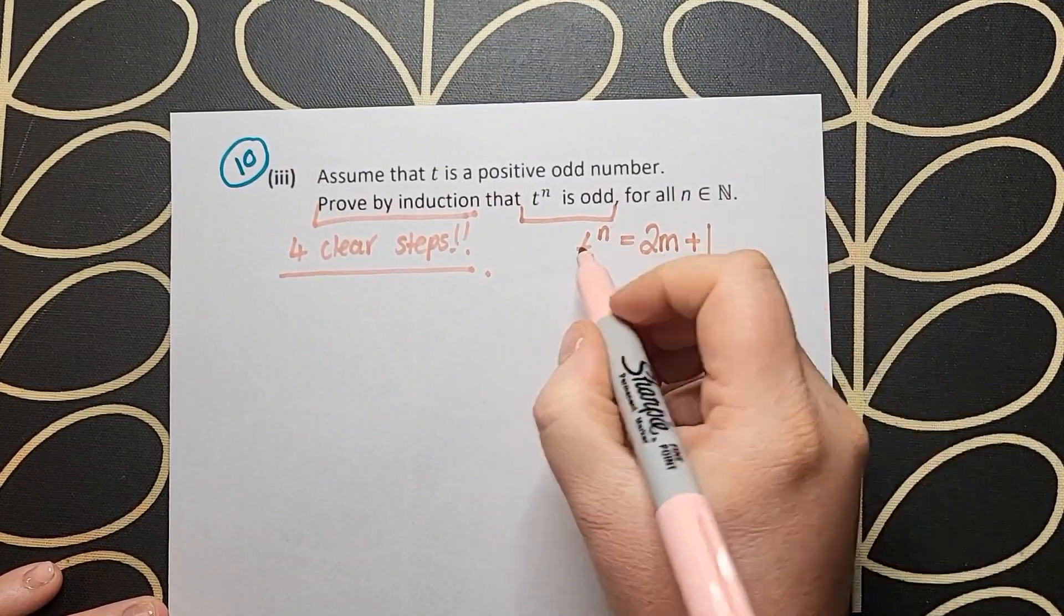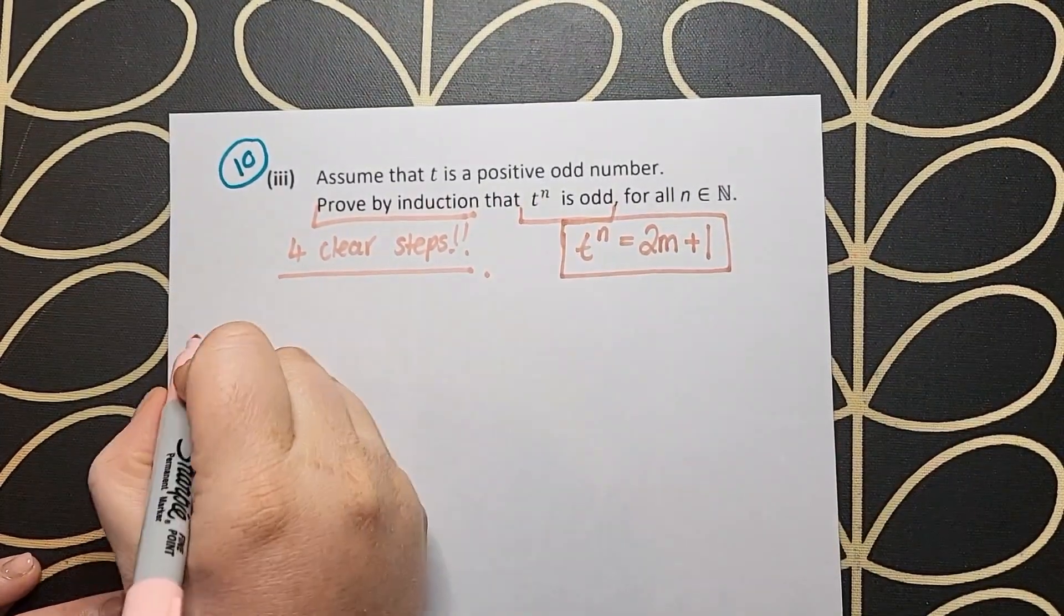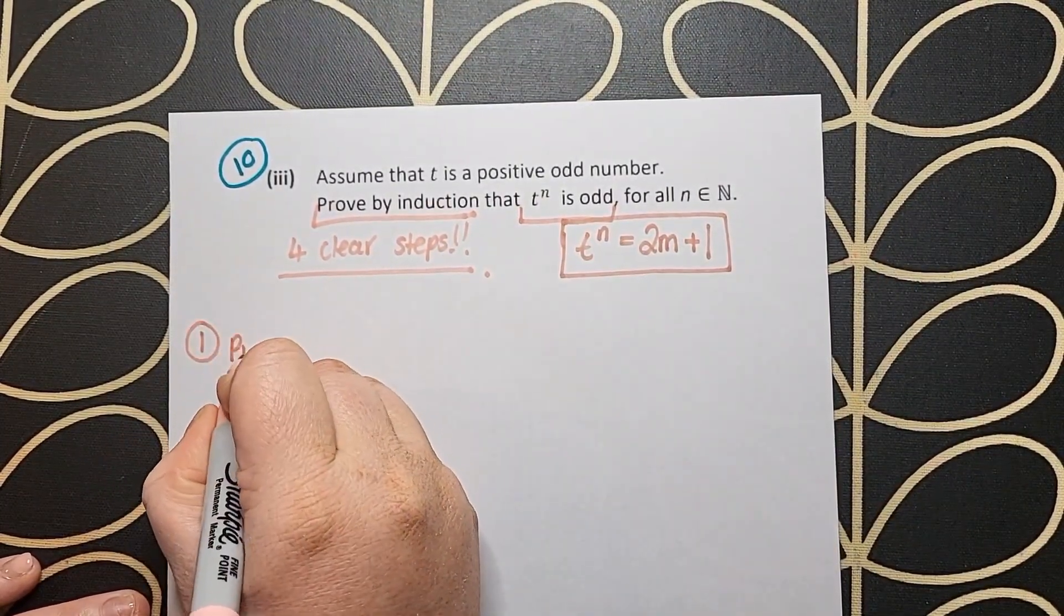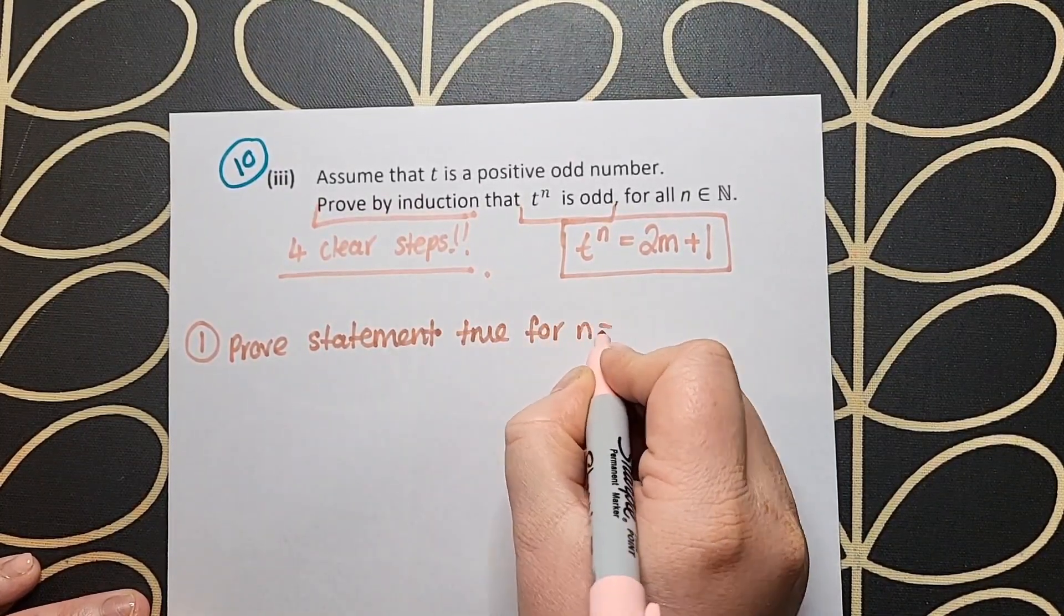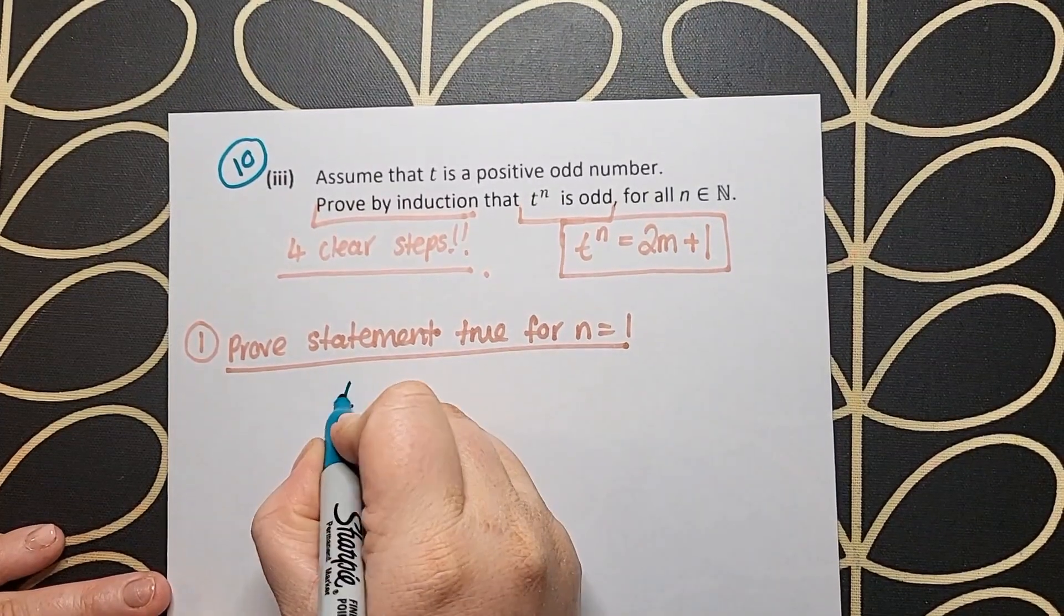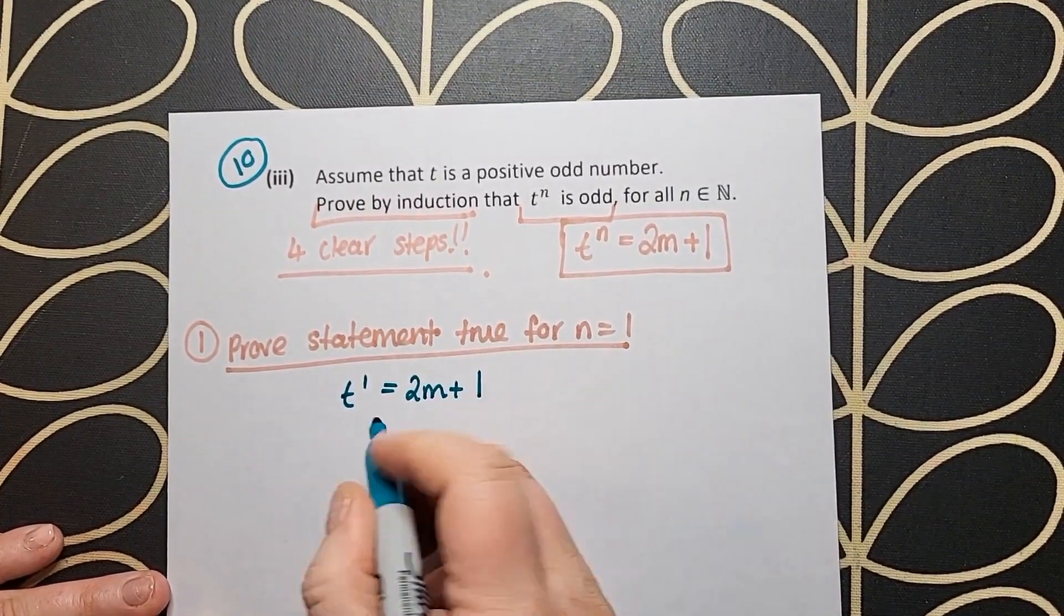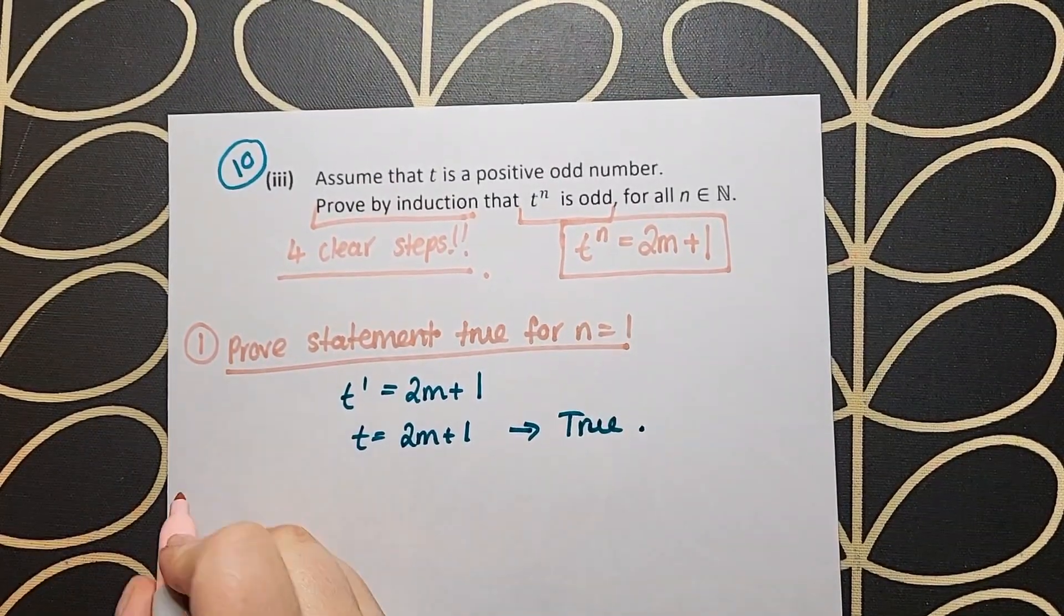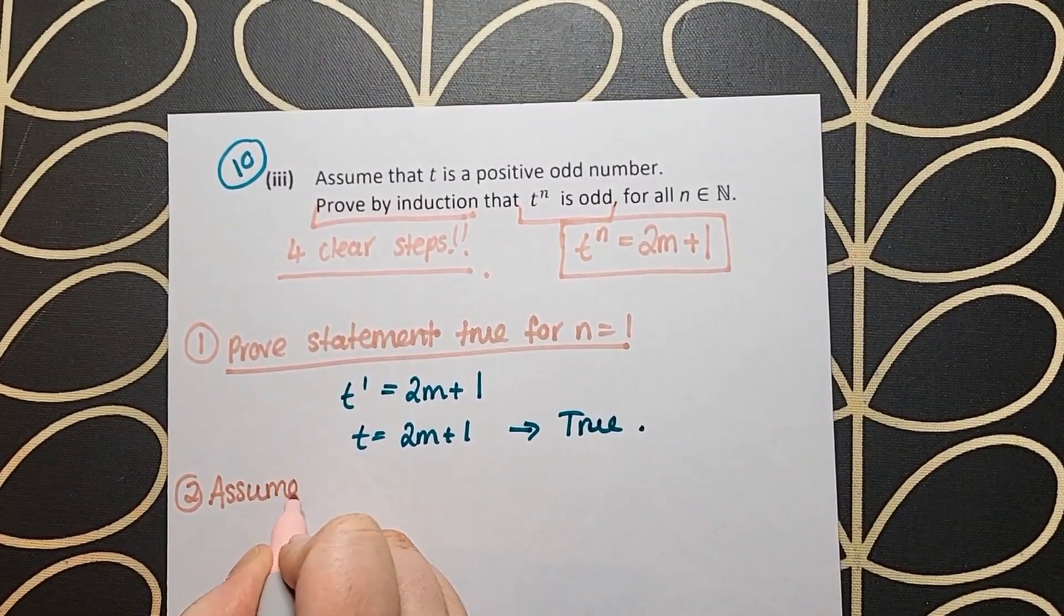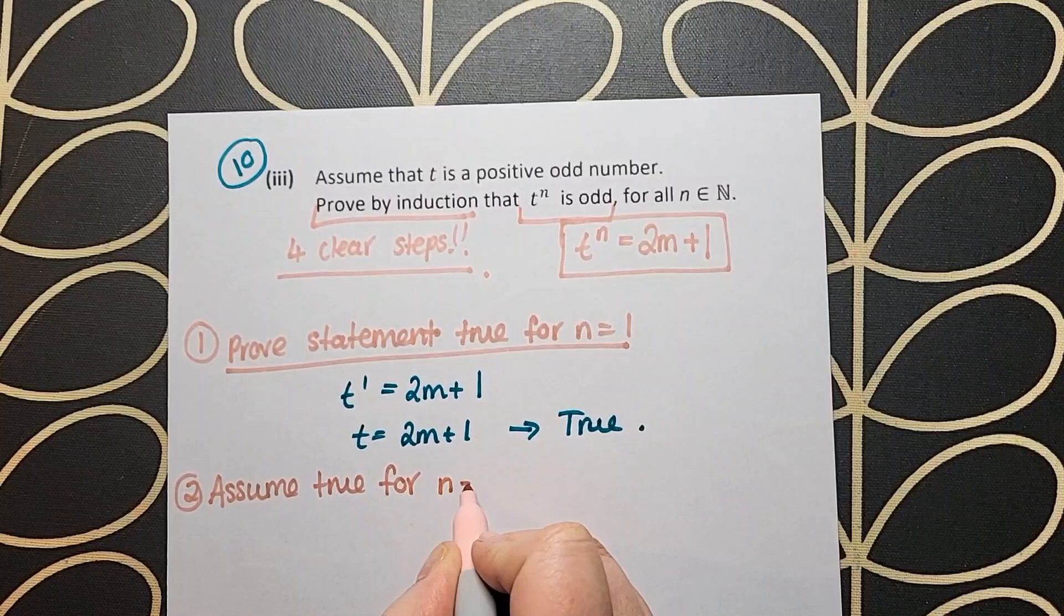Proof by induction is needed here, and they're asking us to show that t_n is odd for all values of n that are natural numbers. There are 4 clear steps that we follow when doing proof by induction. The first one is to prove that the statement is true for n equals 1.